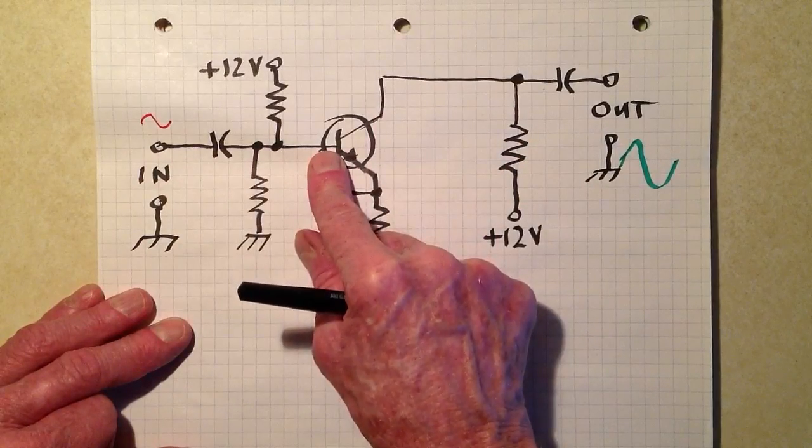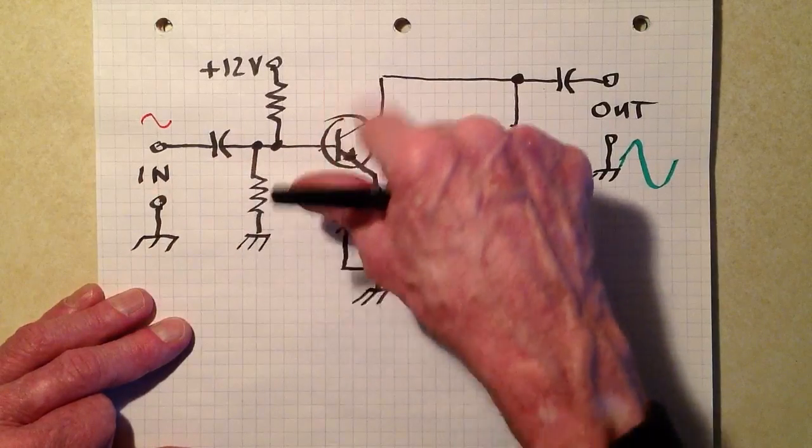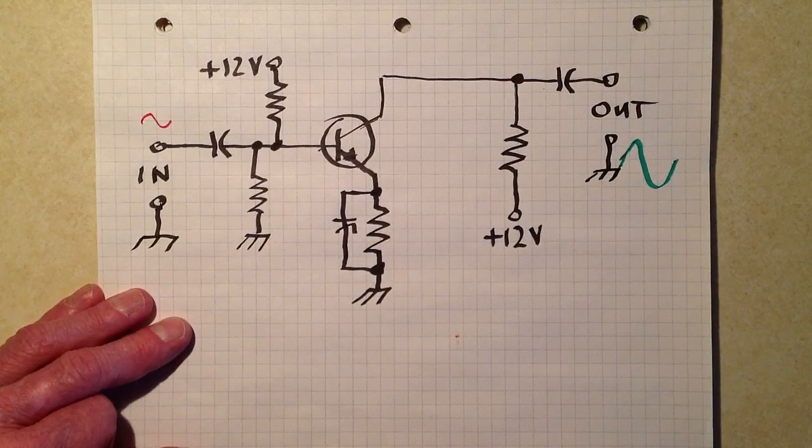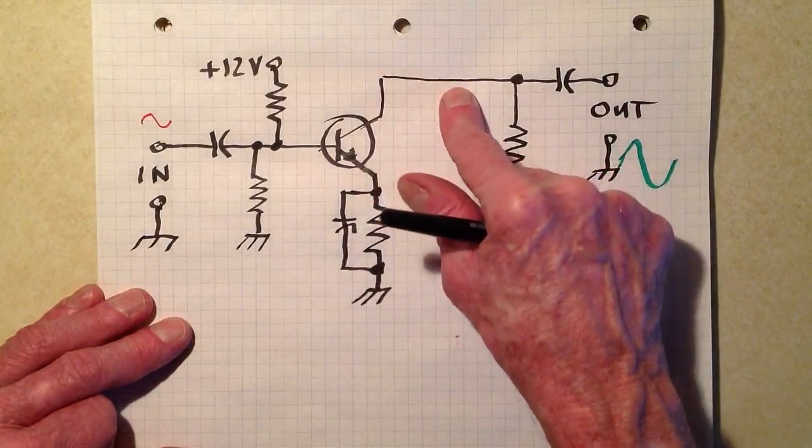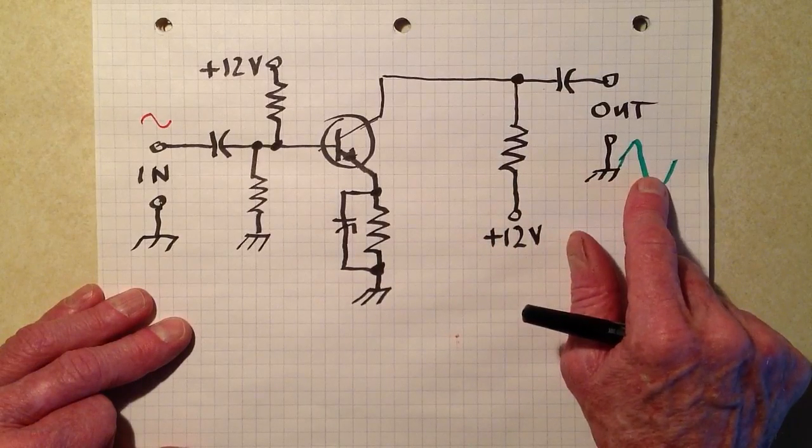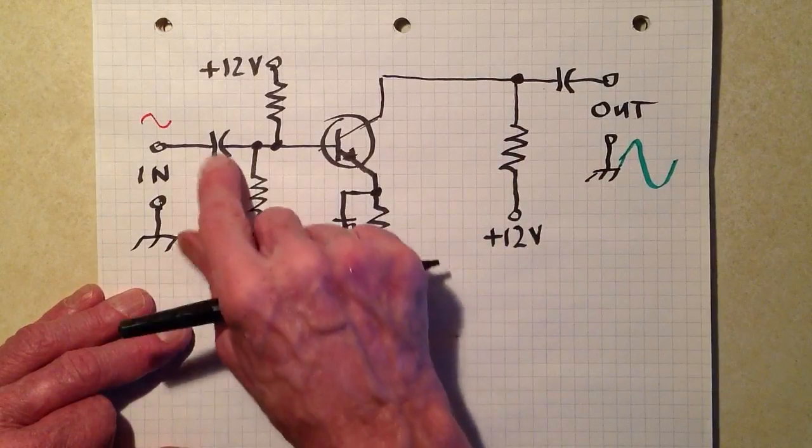The AC signal on here on the base causes the amplitude of that current to fluctuate. Hopefully the amplitude out here will result in a much greater signal voltage than it was at the input.